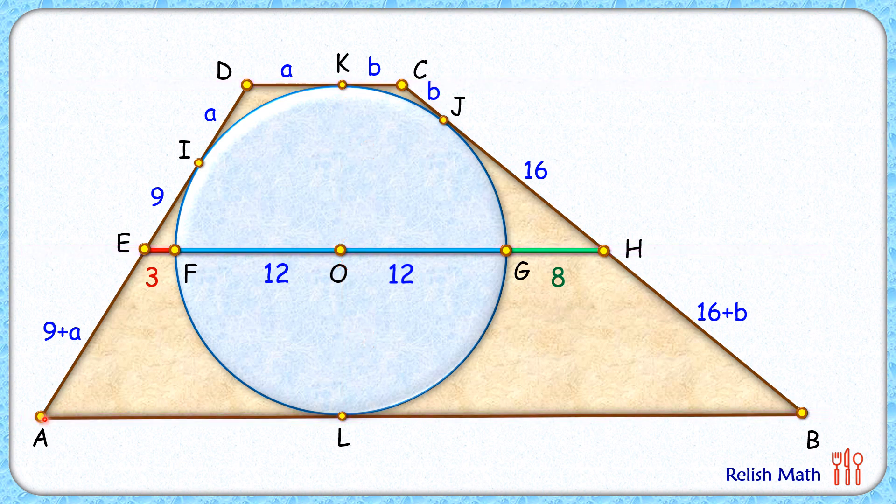Now if we see from point A here we have two tangents drawn, that is AI and AL, and by theorem they will be equal in length. AI length is 18 plus A, so AL will be 18 plus A cm. Same way from point B we have two tangents drawn, BJ and BL. They will be equal. BJ length is 16 plus 16 plus B, so BL length will be the same, that is 32 plus B cm.